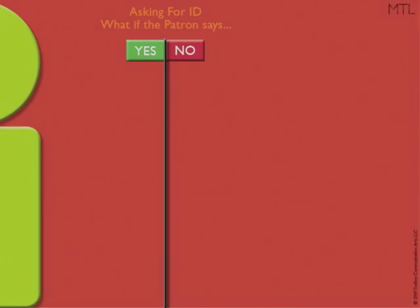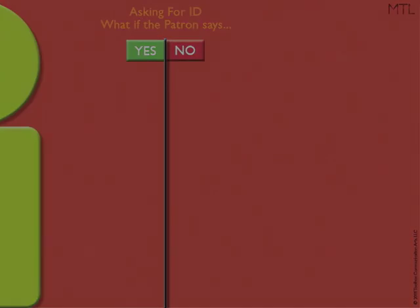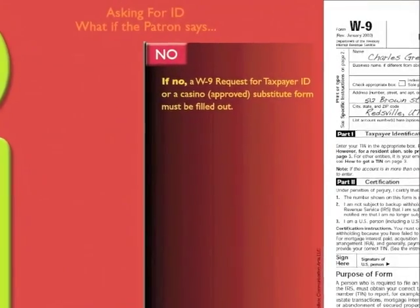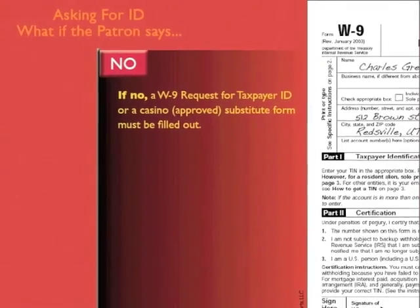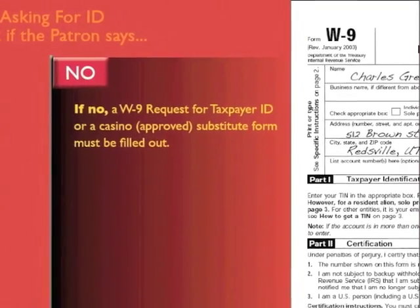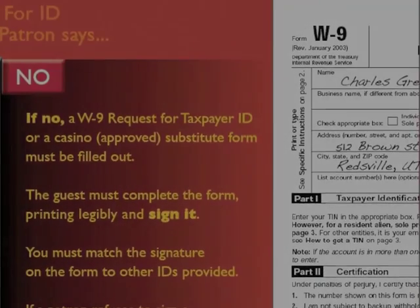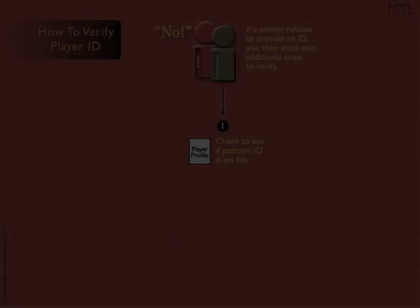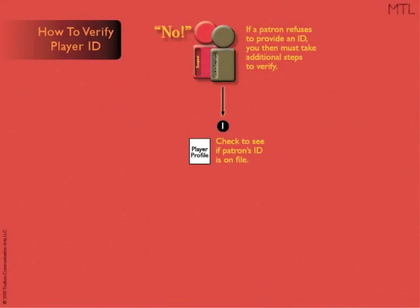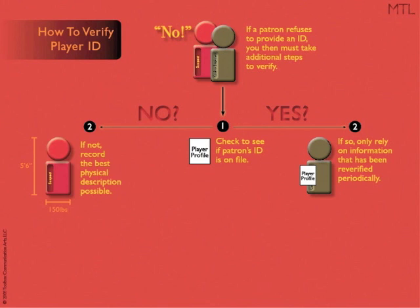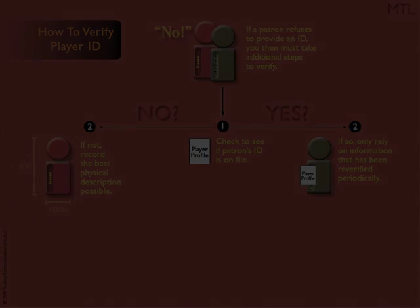Now, asking for ID — what if the patron says no? If no, a W-9 request for taxpayer ID or a casino approved substitute form must be filled out. The first step is to see if the patron's ID is on file. If so, only rely on the information that has been re-verified periodically. If not, record the best physical description possible.